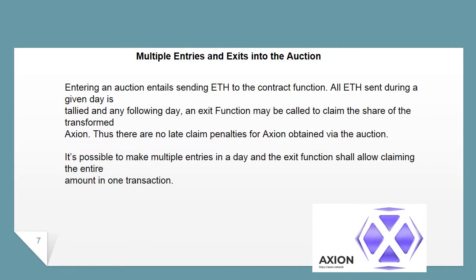Entering an auction entails sending ETH to the contract function. All ETH sent during a given day is tallied, and any following day an exit function may be called to claim the share of the transformed Axion. There are no late claim penalties for Axion obtained via the auction. It's possible to make multiple entries in a day, and the exit function allows claiming the entire amount in one transaction.